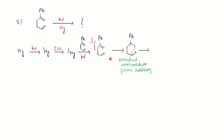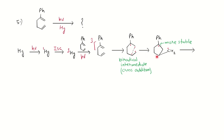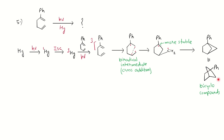In the case of mercury, cross addition will occur, whereas in the previous examples direct 2+2 addition was happening. There are two possibilities for cross addition: you can combine the phenyl radical to the terminal, or the terminal radical to the secondary radical. Since the phenyl radical is more stable, it will remain and its lifetime will be longer, and you get the product after combining the two free radicals, giving a bicyclic compound with two cyclopentane rings.